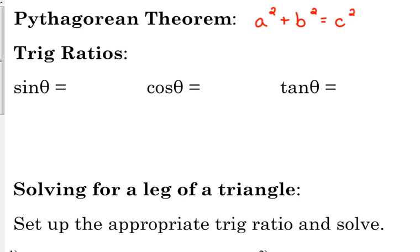Alright, trig ratios. I always abbreviate. So for sine, opposite, I put OPP over HYP for hypotenuse, cosine adjacent ADJ over hypotenuse, and tangent opposite over adjacent.